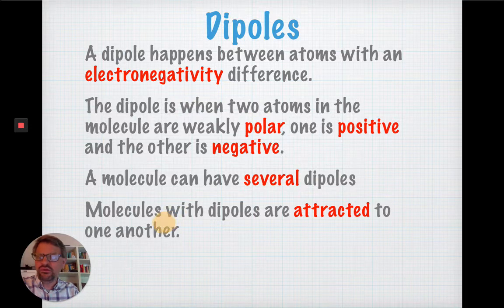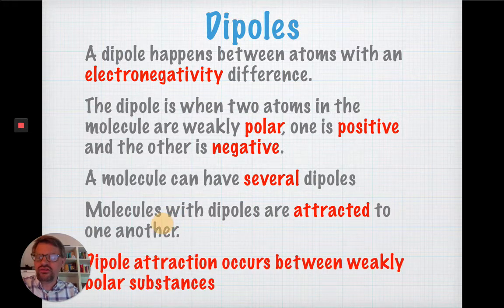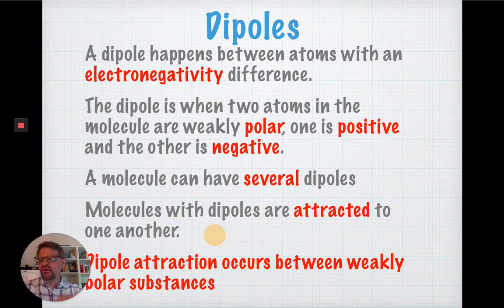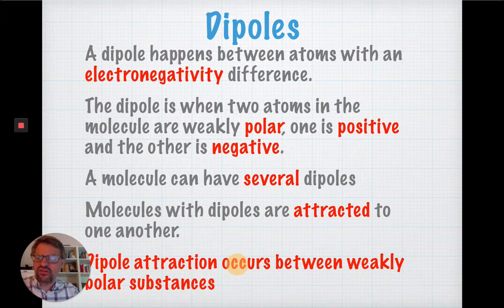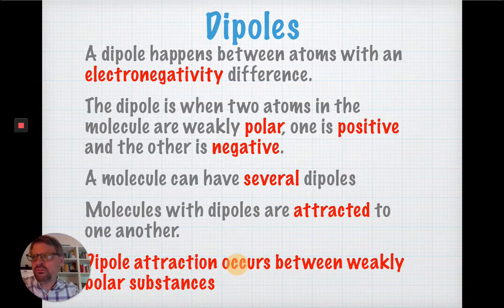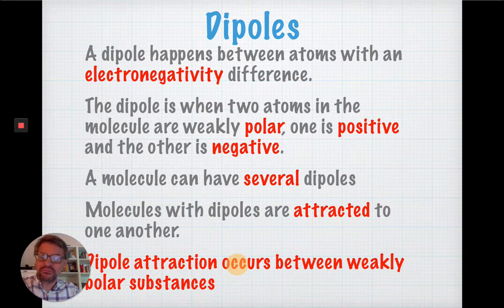So, molecules with dipoles are attracted to one another. There's a thing called dipole attraction, which happens between substances that are weakly polar. Not very polar, but they are polar. That's dipole attraction.